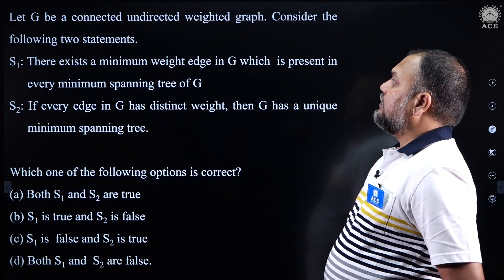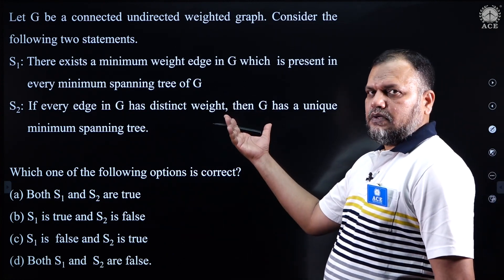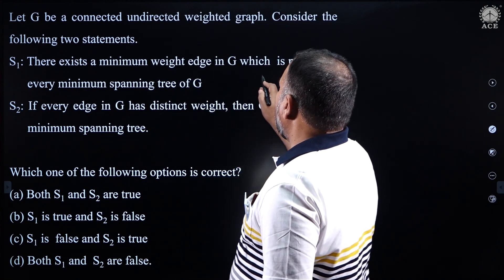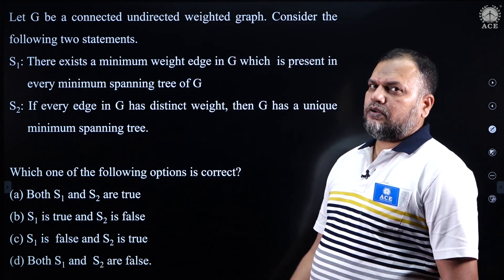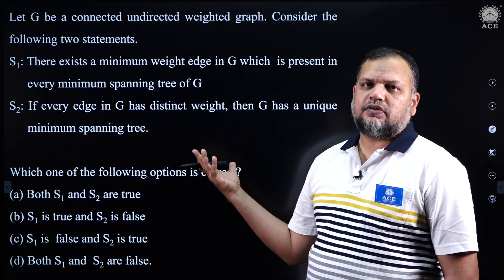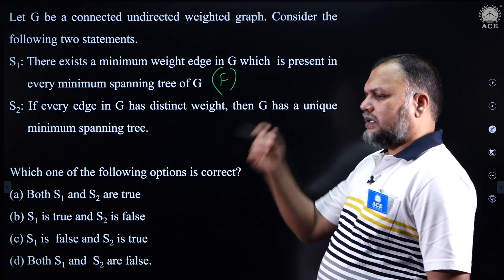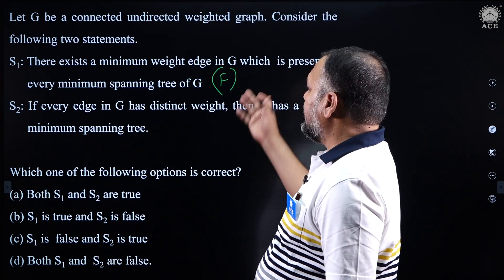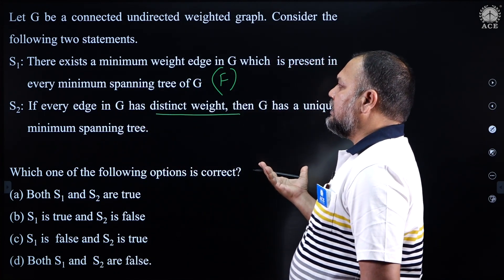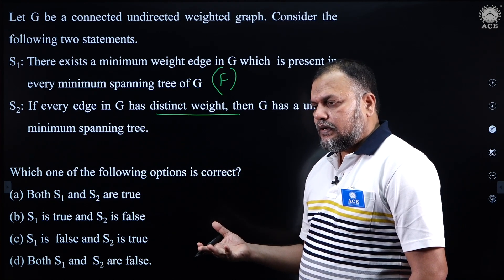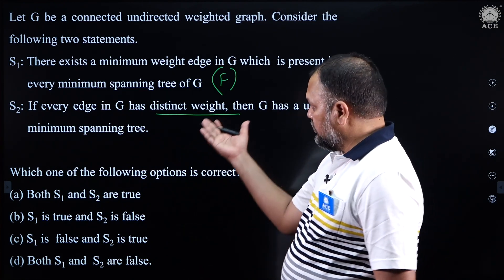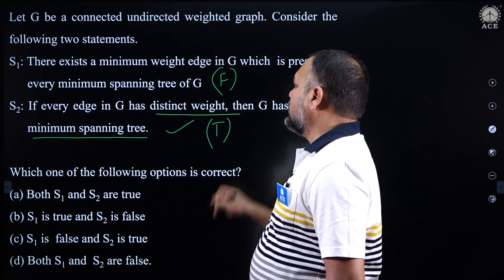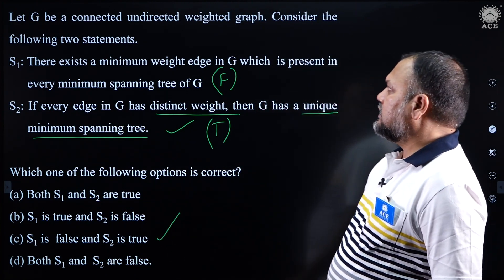Let G be a connected undirected weighted graph. Consider two statements: S1 says there exists a minimum weight edge in G which is present in every spanning tree — this is false, because it is not necessary that every minimum edge is in every minimum spanning tree, particularly when it forms a cycle. S2 says if every edge in G has distinct weight, then G has a unique minimum spanning tree — this is always true. So S1 is false, S2 is true.